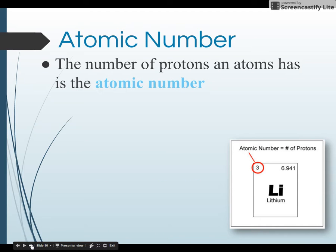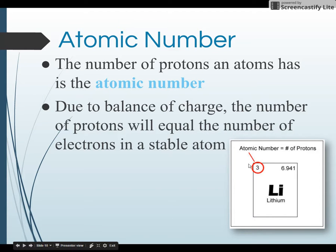The atomic number is the number of protons an atom has. So as you can see here in this picture, lithium has a three. That means that it has three protons.